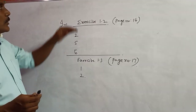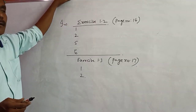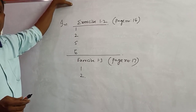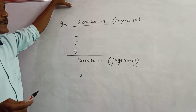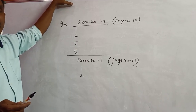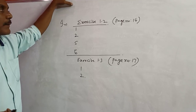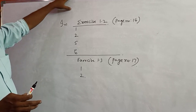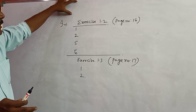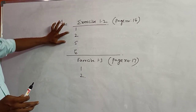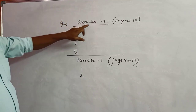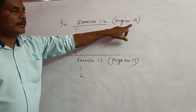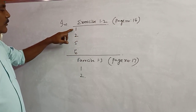Today you will learn two concepts: the first one is magnifying the decimal, and the second one is finding the square root of an irrational number. Those two concepts you learned today. For these two concepts I give you worksheets. Exercise number 1.2 in your textbook, page number 14.